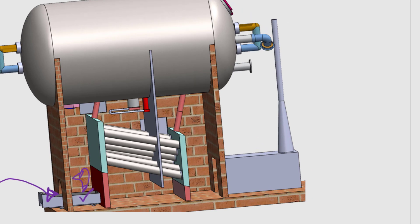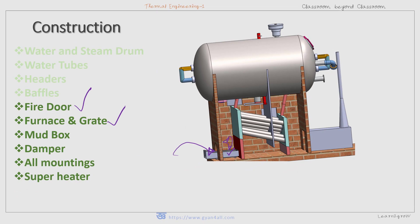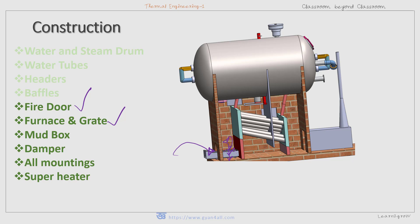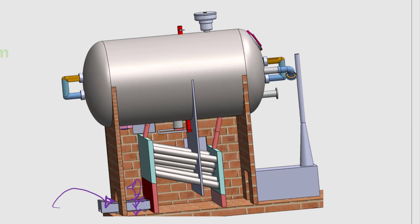The grate is the platform for burning the solid fuel. The opening of the grate allows the ash to settle below the grate, where it is collected and removed periodically. The furnace is placed under the uptake header where the fuel is burned, and the hot gases pass through the water tubes.